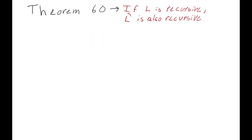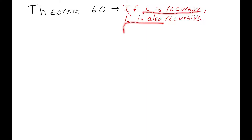There are a couple of really important theorems that deal with recursive and recursively enumerable languages. These theorems are going to help us answer the question of what are the limitations of a Turing machine — can a Turing machine define all languages? The first one is Theorem 60: if a language is recursive, then its complement is also recursive.